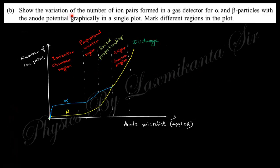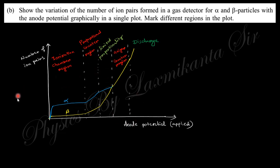The next question asks to show the variation of the number of ion pairs in a gas detector for alpha and beta particles with anode potential, graphically in a single plot, marking different regions. For alpha particles and beta particles, the plot shows distinct regions: the ionization chamber region, the proportional counter region, the Geiger-Müller region, the limited proportionality region, and the continuous discharge region, all marked against the applied potential.